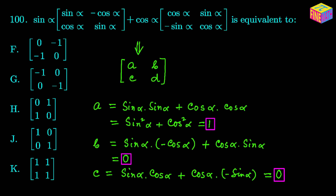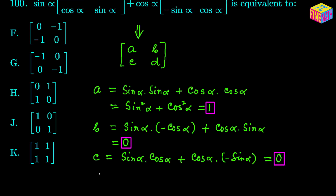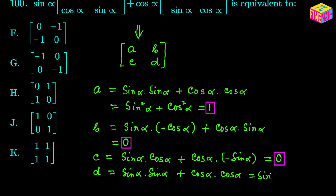Let's calculate D, the second element of the second row of the result matrix. D will be equal to sin(α) × sin(α) from the first matrix plus cos(α) × cos(α) from the second matrix. This is obviously equal to sin²(α) + cos²(α), which equals 1 — from the Pythagorean identity in trigonometry.